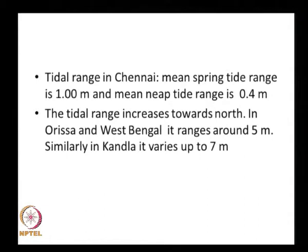As you see here in this slide, the tidal range in Chennai — the mean spring tide range is 1 meter and the mean neap tide range is 0.4 meter. Basically we have two tidal ranges: spring tide and neap tide. As you go towards the north, the tide range increases. On the east coast it is around 5 meters, whereas in Kandla, where there is a creek, it goes up to 7 meters.